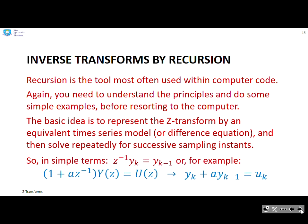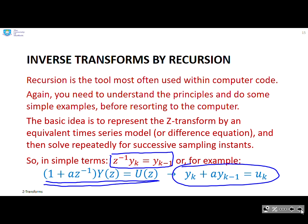The basic idea is to represent the Z-transform by an equivalent time series model or difference equation and then solve repeatedly for successive sampling instances. What we're going to use is this understanding that if you do Z to the minus 1 times y(k), essentially that means y(k minus 1). So if I've got a relationship between transforms, I can replace that by an equivalent difference equation.